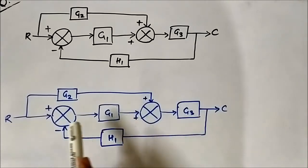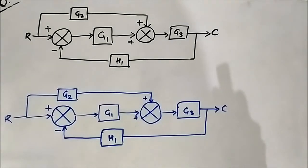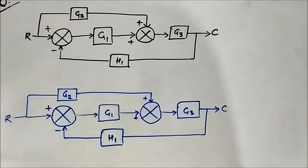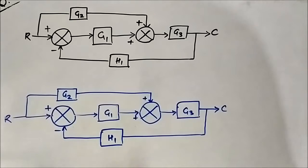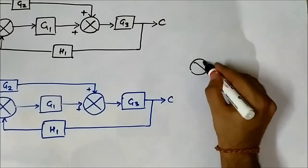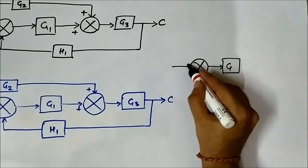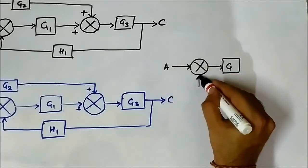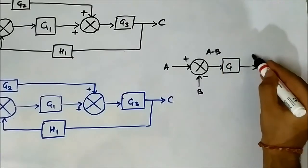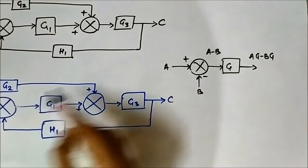If you pay attention to this summing point and this block G1, we can take this summing point ahead of this block. To apply the basic rule of block diagram reduction: suppose we have a summing point and a block G, with inputs A and minus B, so the output is A minus B. After the block G, this becomes A·G minus B·G.